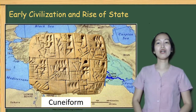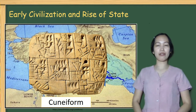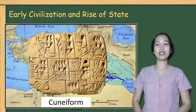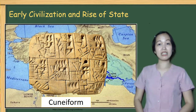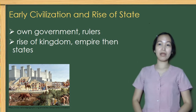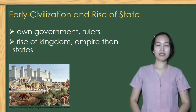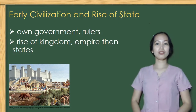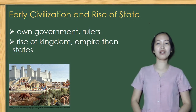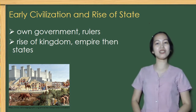One of the first writing systems — the cuneiform — is one of the most important developments in the history of Mesopotamian culture. Every city in Mesopotamia had its own government, rulers, warriors, patron god, and functioned like an independent country.